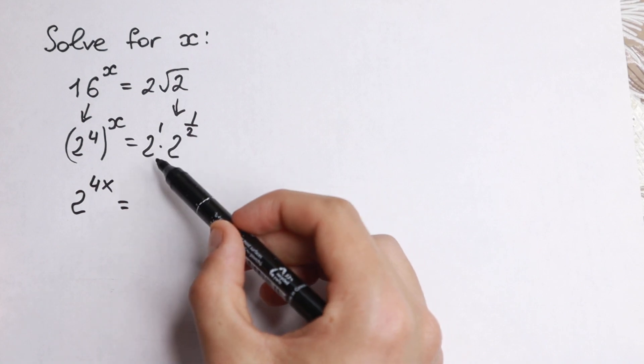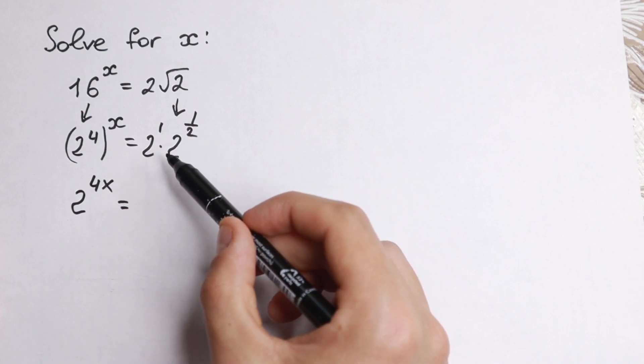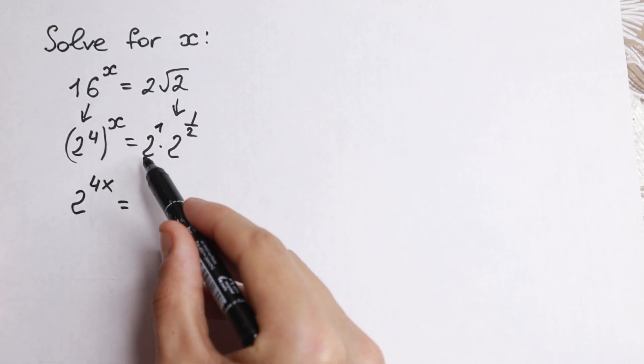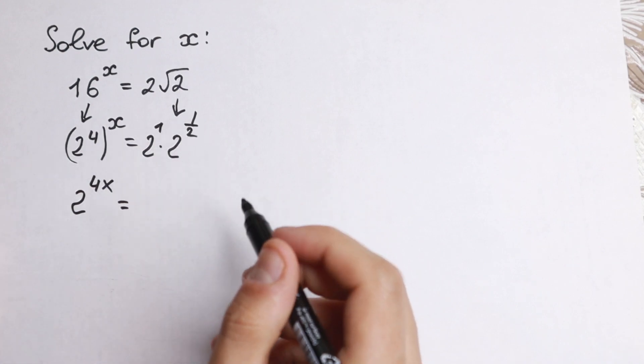And right here we have another property, and it's really good, because if we have same base, and if you multiply these elements, you need to add your powers, your exponent.